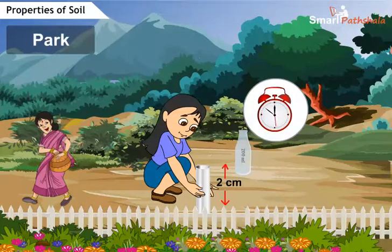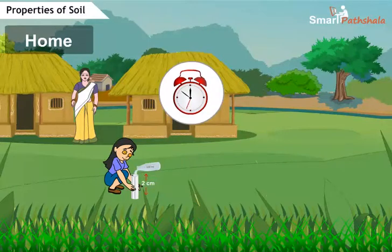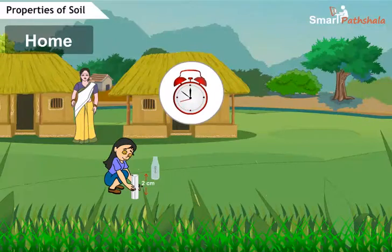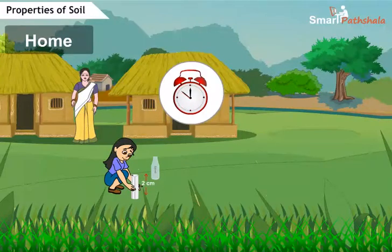Repeat the same at the home where you select the soil. Note the time when you start pouring water and note the time again when all the water has percolated, leaving the pipe empty.